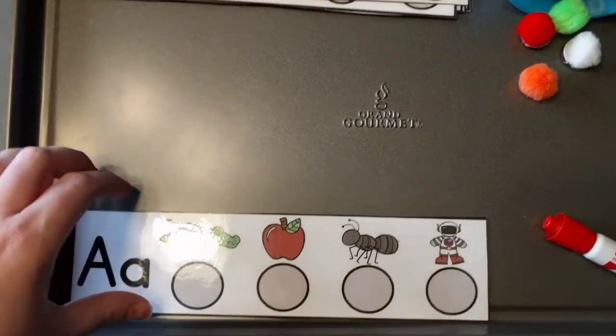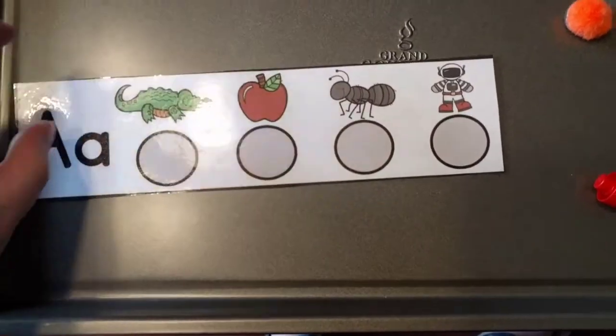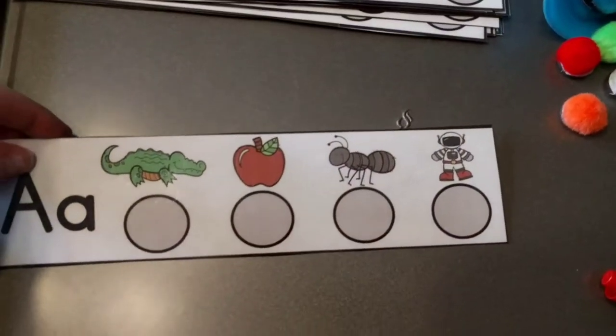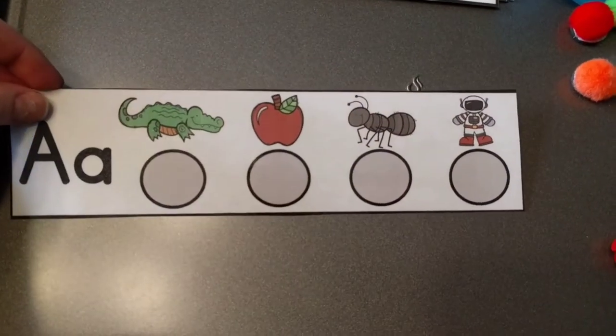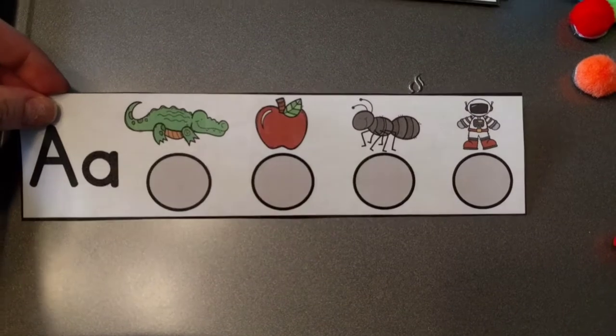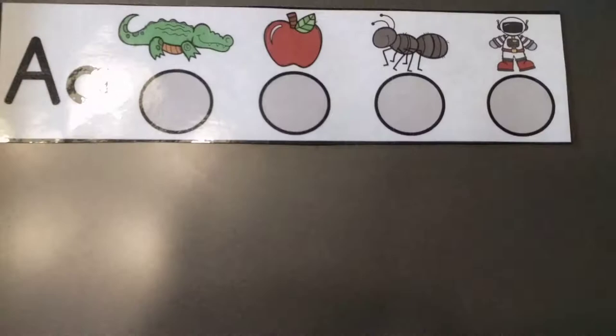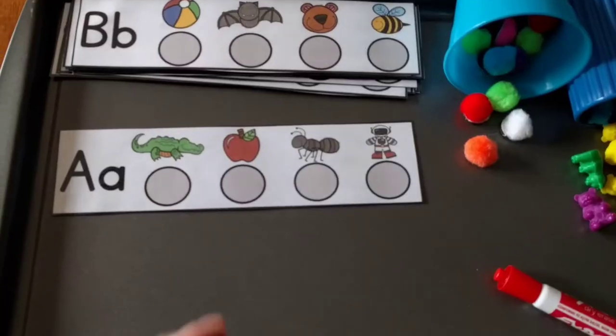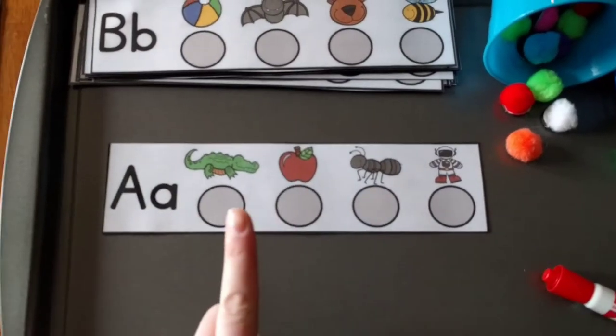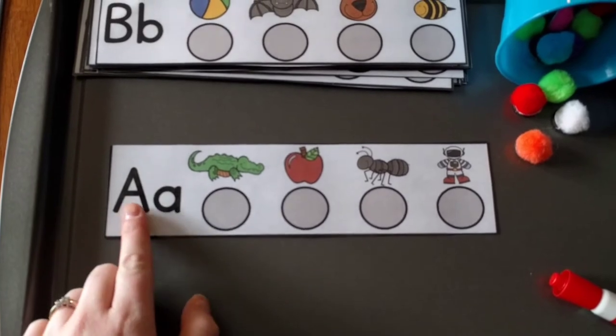Basically all it is, I'm going to show you a couple of different ways you can do it. It just has capital A and lowercase a here, as you can see, and then it has the different pictures for the beginning sound. So what they're going to do is they can just do it with their finger if you want.